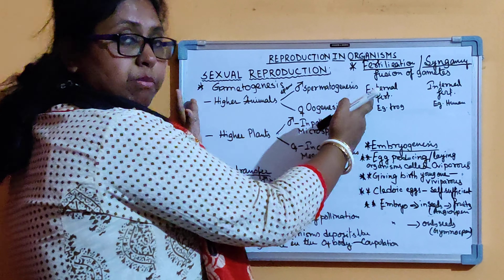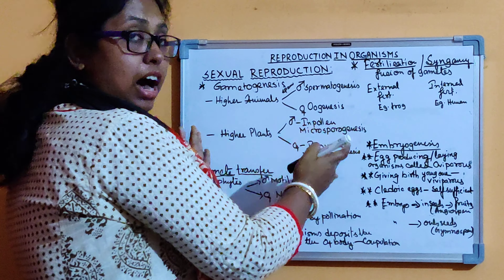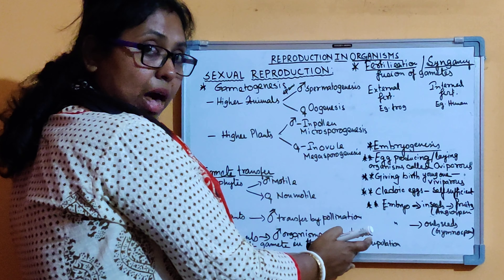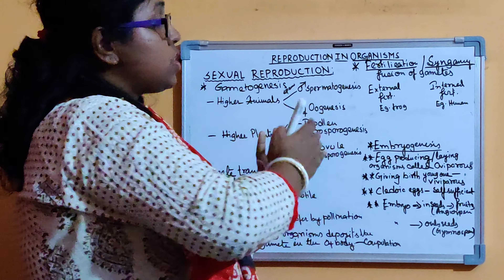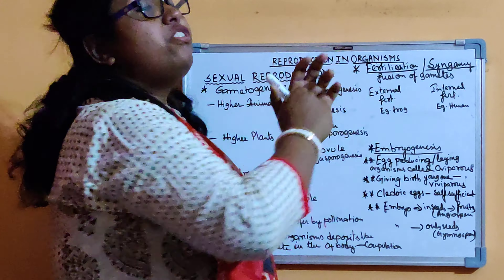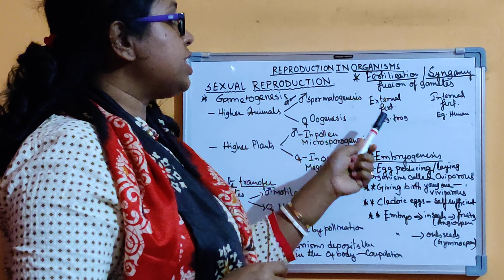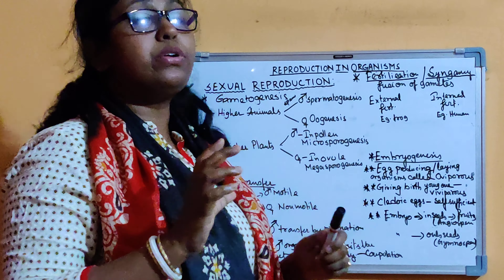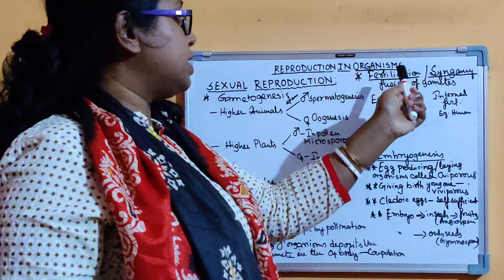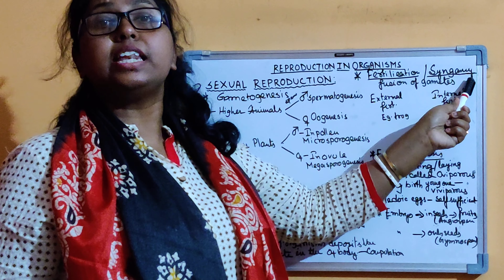The first process is gametogenesis, that means gamete formation. After gamete formation, the gamete is transferred. After the transfer of gametes, the next process is fertilization. We all know that fertilization is the fusion of male and female gametes. This is also called syngamy.